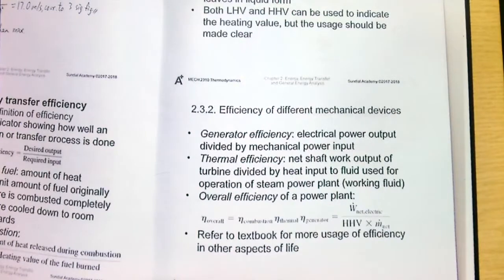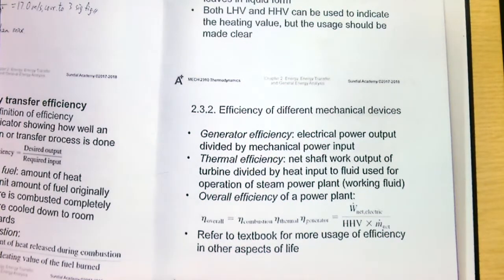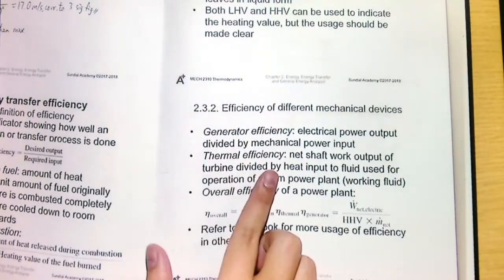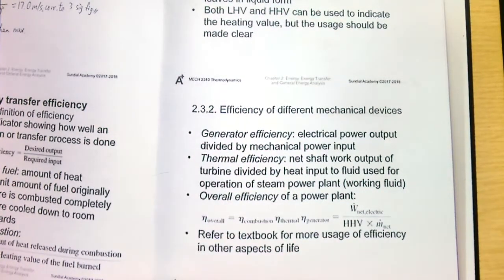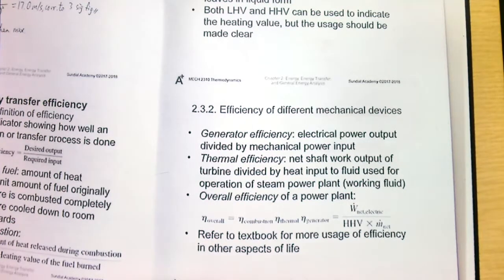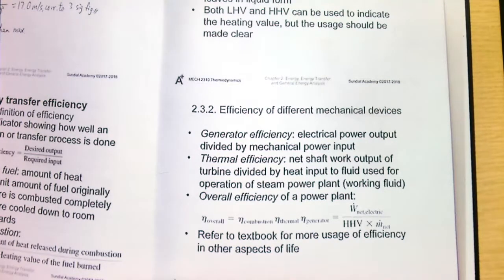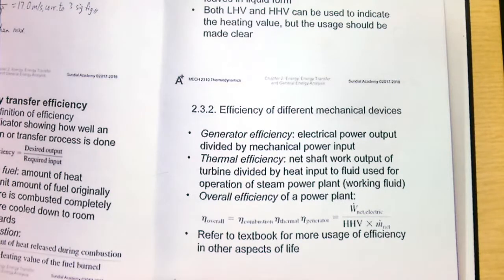Besides electrical power divided by mechanical power, efficiency can also be expressed as electrical energy divided by mechanical energy. As a reminder, thermal efficiency is defined as the ratio of the net shaft work output from a turbine to the heat input to the working fluid used in a steam power plant.